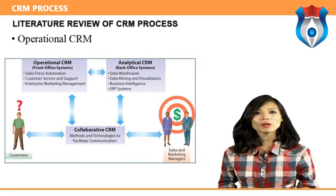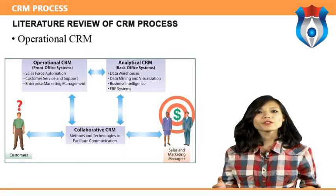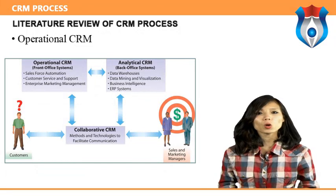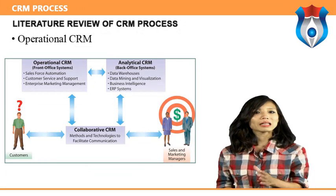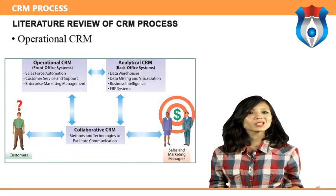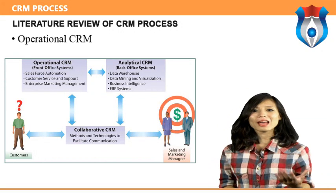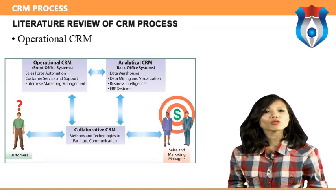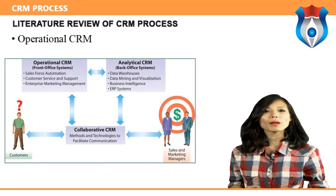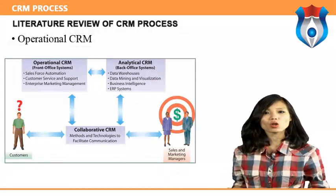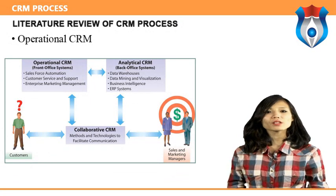Operational CRM supports front office processes — for example, staff in a call center. Operational integration points exist to human resource systems for user data and ERP systems for transferring order information captured by a call center representative. From an operational perspective, CRM is an integration of technologies and business processes adopted to satisfy the needs of a customer during any given interaction.